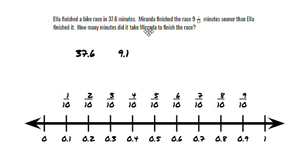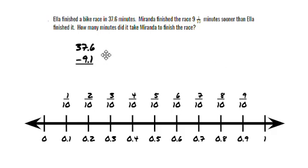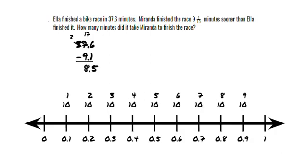So now we have to figure out what operation. Well, if it says Miranda finished the race 9 and 1 tenth minutes sooner than Ella finished it, how many minutes did it take Miranda to finish? So if Miranda finished sooner, we are going to be doing subtraction. We need to go ahead and line up our decimals. Then we can finish the subtraction problem. 6 minus 1 is 5. And 7 minus 9 — we're going to have to regroup, so the 7 becomes 17 and the 3 becomes a 2. So 17 minus 9 is 8. And 2 minus nothing is 2. So our answer is 28 and 5 tenths. That is how we can use a number line with benchmark fractions like 1 tenths, 2 tenths, 3 tenths, 4 tenths, 5 tenths, 6 tenths, 7 tenths, 8 tenths, and 9 tenths to help us solve a problem.